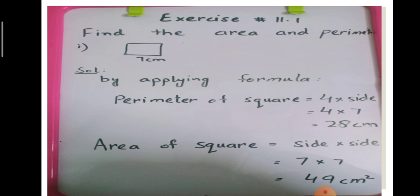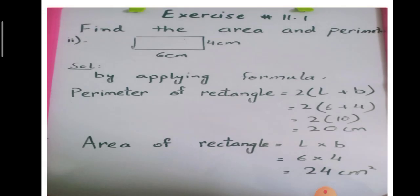Now come on the part number two. By applying formula, perimeter of rectangle equal to 2 into length plus breadth. Length is 6, breadth is 4. 6 plus 4 equal to 10. 2 multiply by 10 equal to 20 centimeter. Area of rectangle equal to length multiply by breadth. 6 multiply by 4, 6 four times, 24 centimeter square.